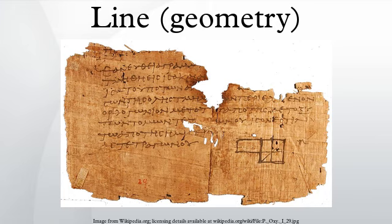Cartesian plane: lines in a Cartesian plane, or more generally in affine coordinates, can be described algebraically by linear equations. In two dimensions, the equation for non-vertical lines is often given in the slope-intercept form, where m is the slope or gradient of the line, b is the y-intercept of the line, and x is the independent variable of the function y = f(x).